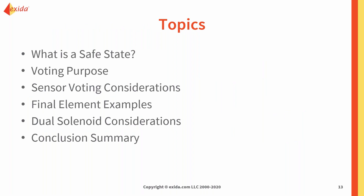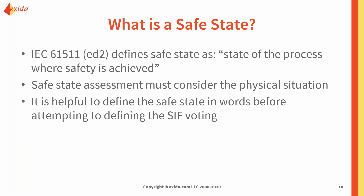Let's move on to the subject of this webinar. What we're going to talk about is key to safety instrumented systems: the definition of the safe state. We'll start by defining what we mean by safe state, discuss questions about why voting is done the way it is in safety instrumented systems, and why it may differ from the logic solver voting. We'll do examples on sensor voting, final element calculations, multiple solenoids on a single final element, and then follow up with a conclusion summary.